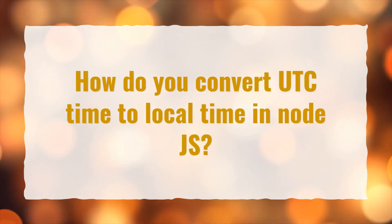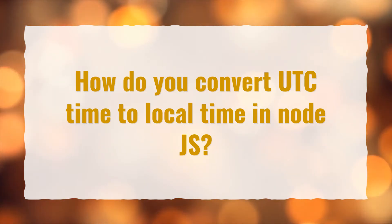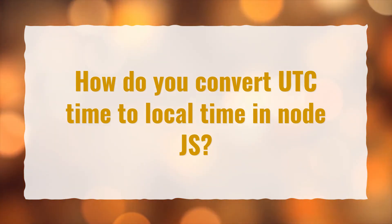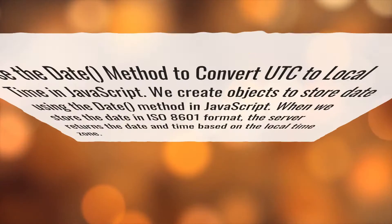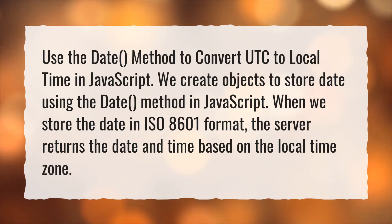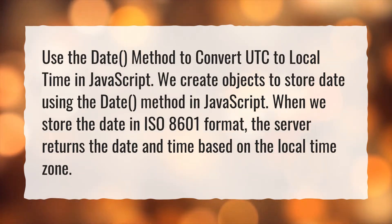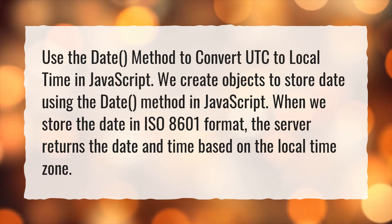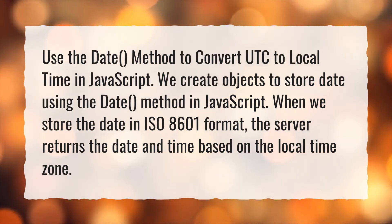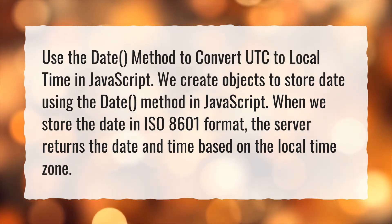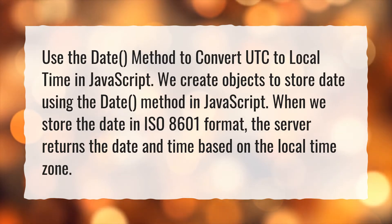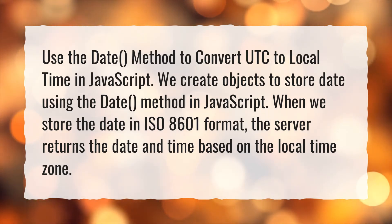How do you convert UTC time to local time in Node.js? Use the Date method to convert UTC to local time in JavaScript. We create objects to store the date using the Date method in JavaScript. When we store the date in ISO 8601 format, the server returns the date and time based on the local time zone.